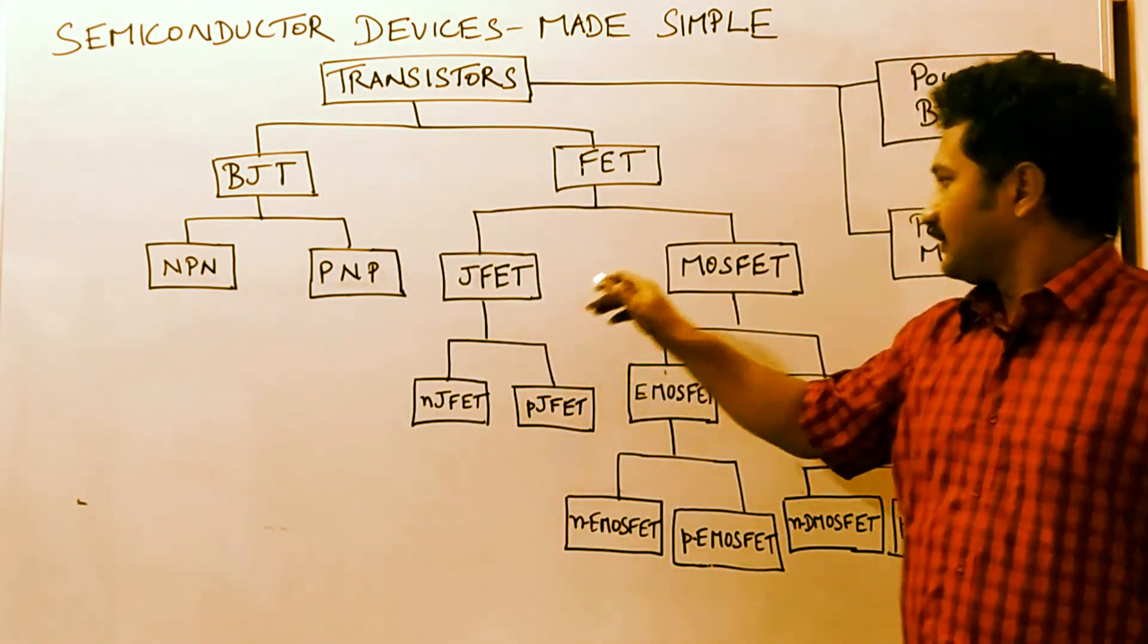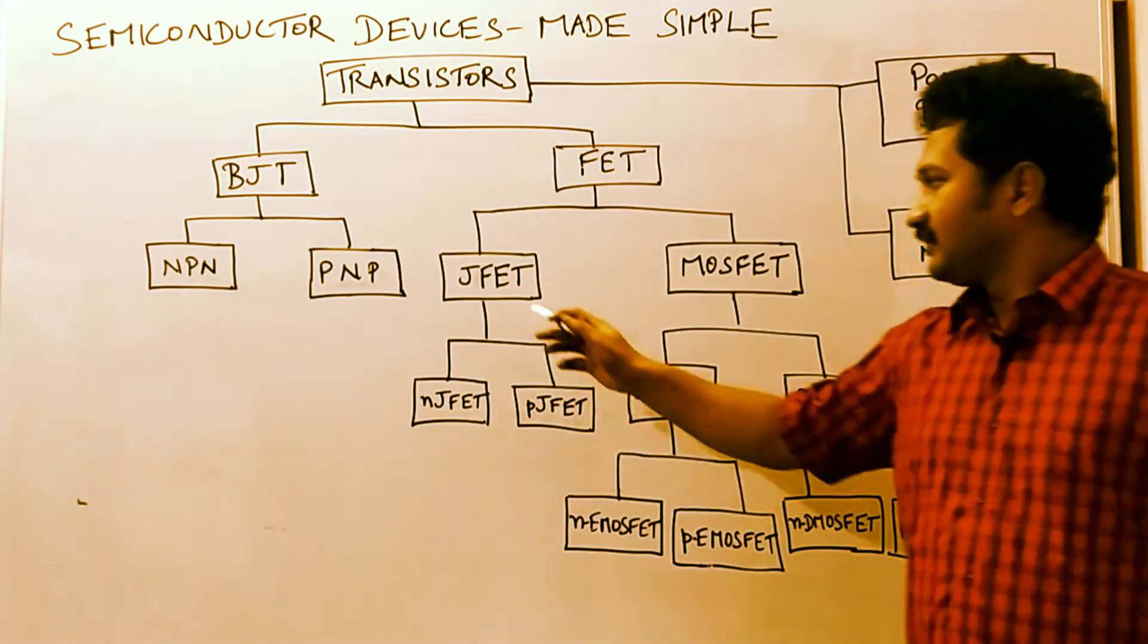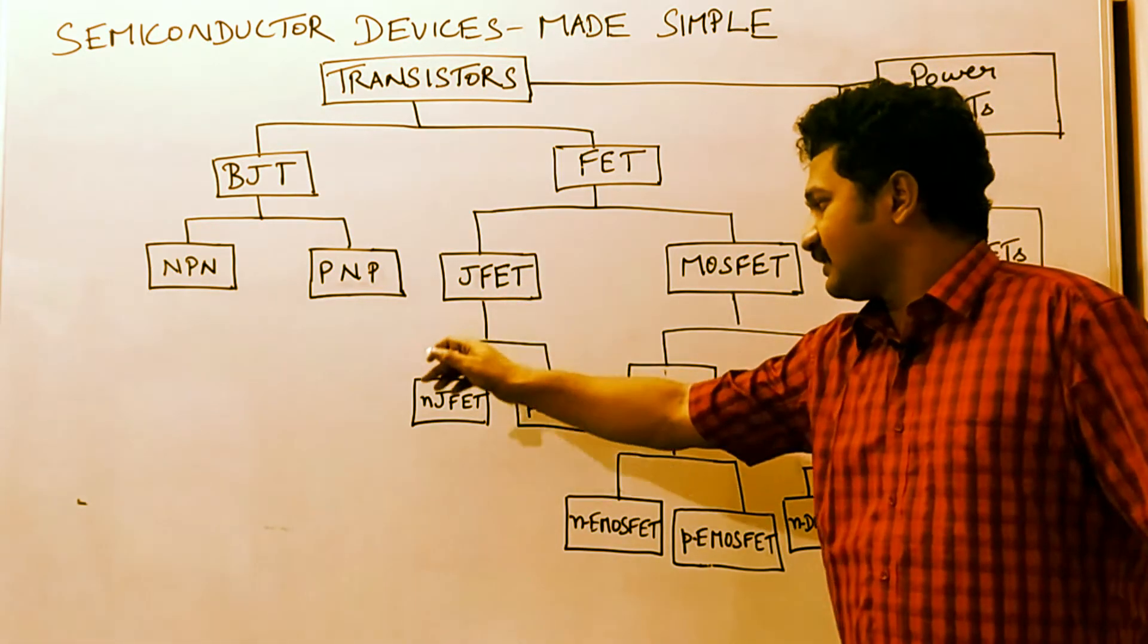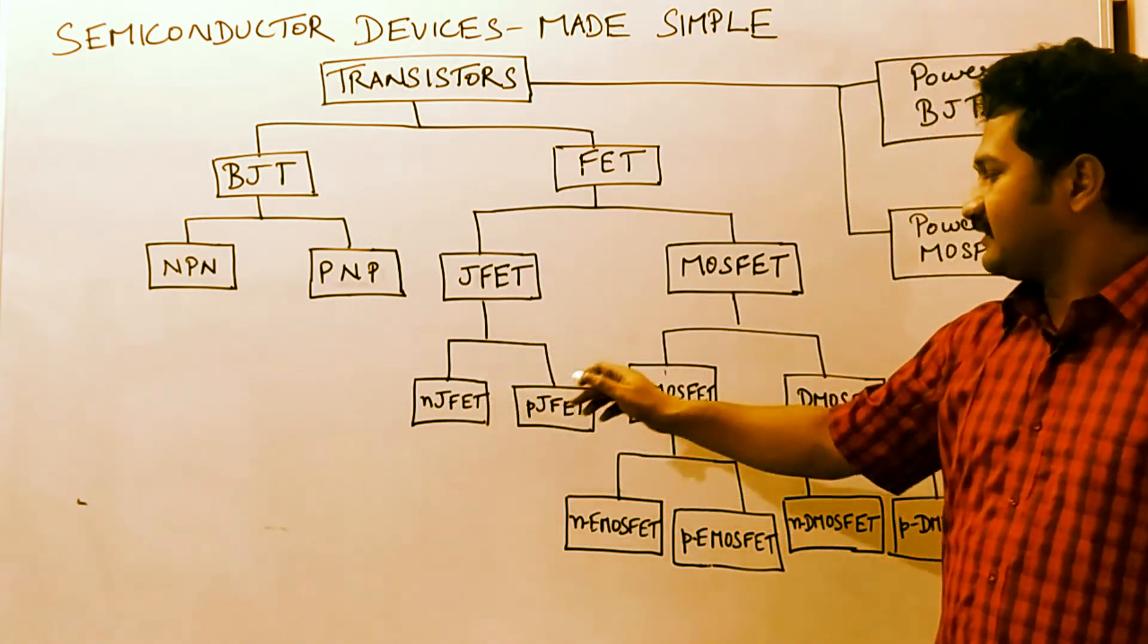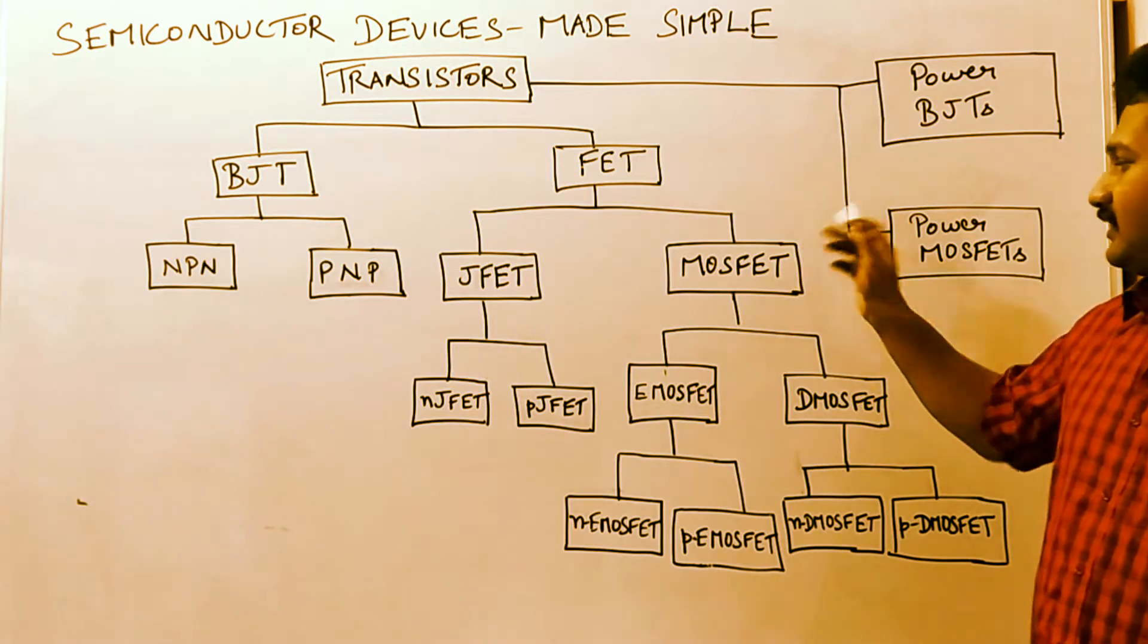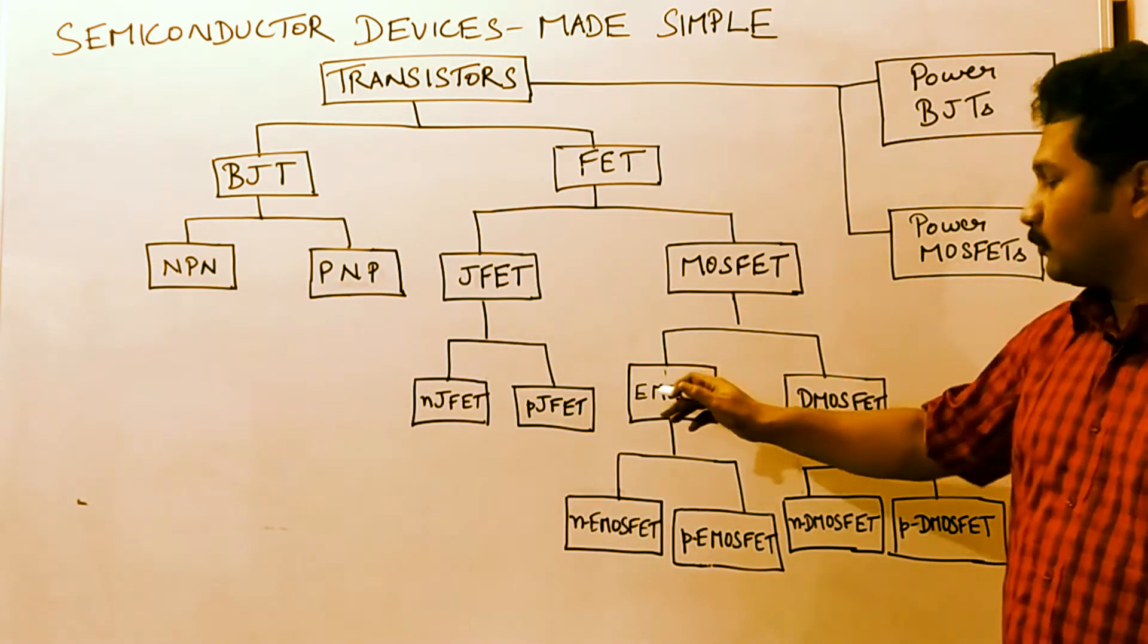Under junction field effect transistor, it is again subdivided into two types: N channel JFET and P channel JFET. Under MOSFET, we have enhancement mode MOSFET and depletion mode MOSFET.